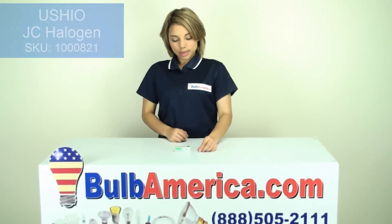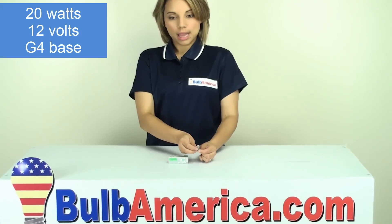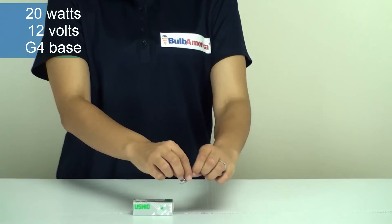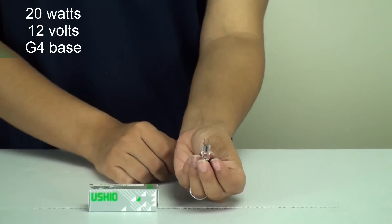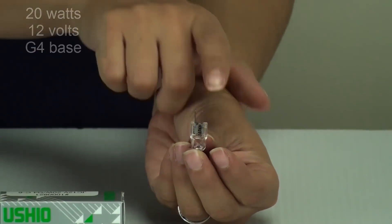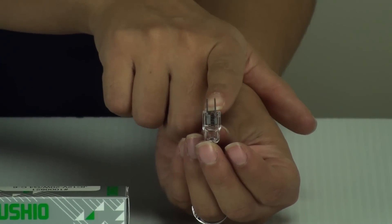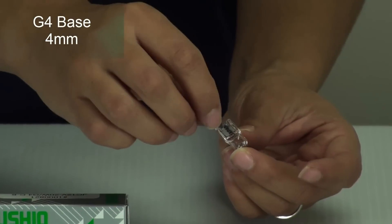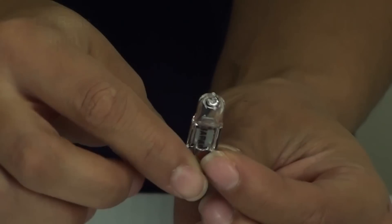This bulb is 20 watts and 12 volts and has a G4 two-pin base. As you can see, there are two pins with about four millimeters in between, and it has a C6 filament.